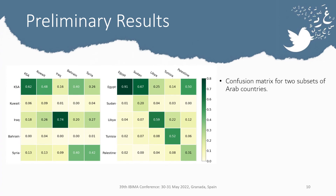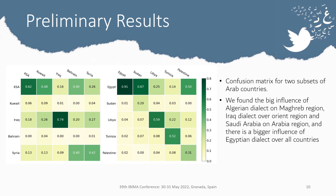We are also sharing two confusion matrices of two subsets of Arab countries. We found a strong influence of the Algerian dialect on the Maghreb region in the west of the Arab-speaking world, the Iraqi dialect over the Orient region, and Saudi Arabia over the Arabia region. There is also a bigger influence of the Egyptian dialect over all countries. From the confusion matrices, we can see the influence of large countries on their neighbors — for example, Saudi Arabia with Kuwait, and Egypt with Sudan, showing higher correlations.